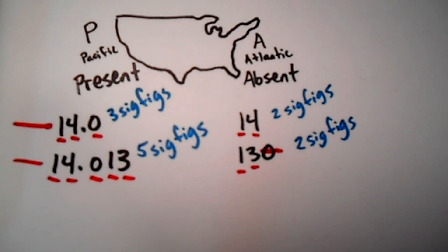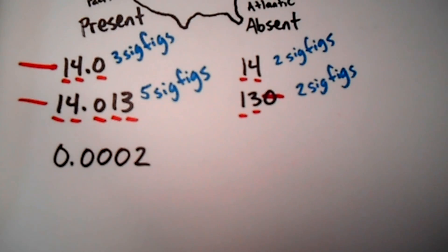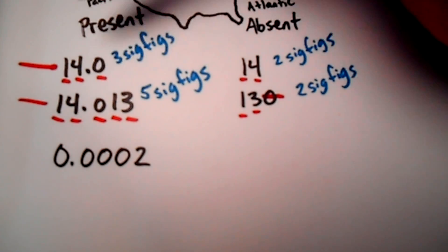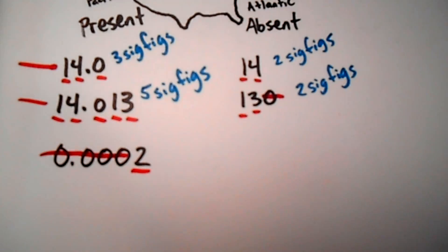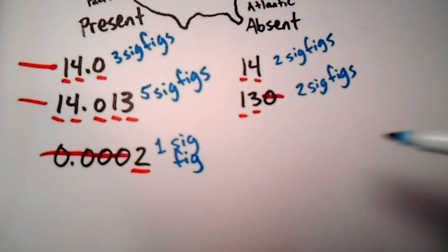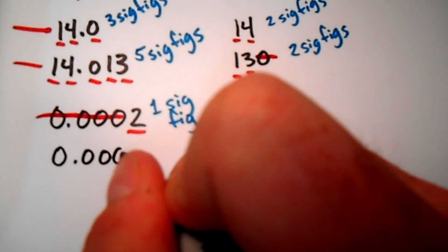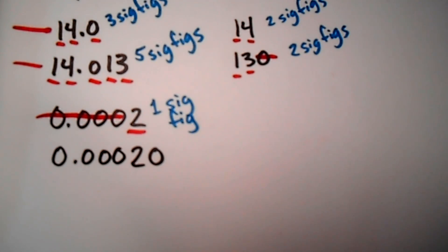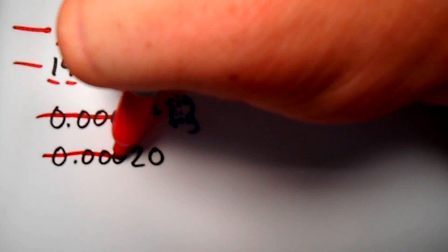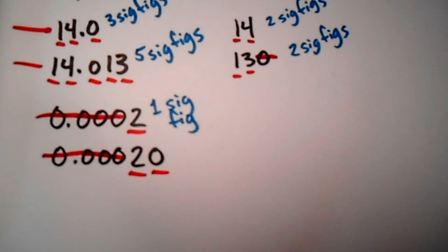Let me show you a Pacific-side example where there are some zeros to cross off — this would be for really small numbers. If I had something like 0.0002, I'd start on the present Pacific side and cross off all those zeros until I get to the first non-zero number. That two is my first significant value and also my only value, so I have one sig fig. If I had something more precise like 0.00020, I cross off all leading zeros, the two is the first non-zero number and is significant, and the zero following it is also a significant figure — so that value has two sig figs.